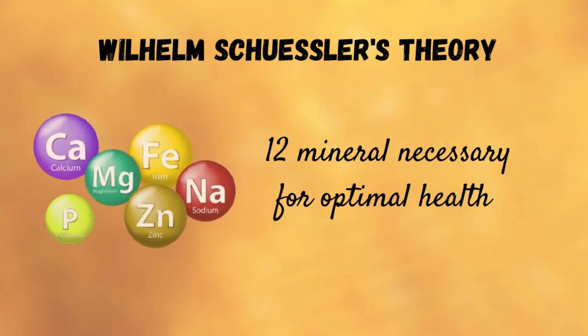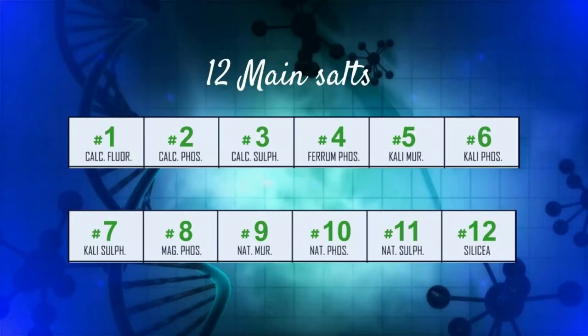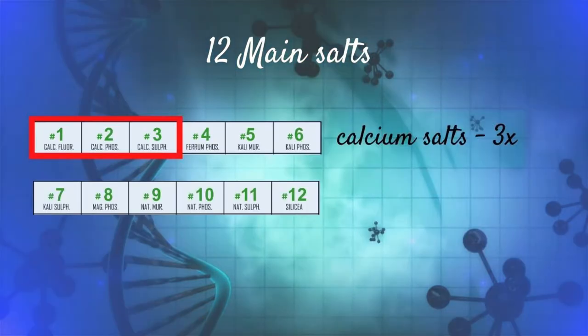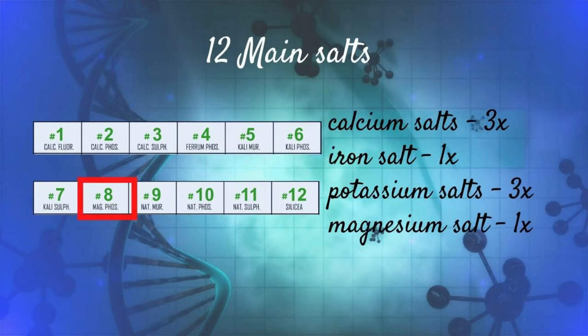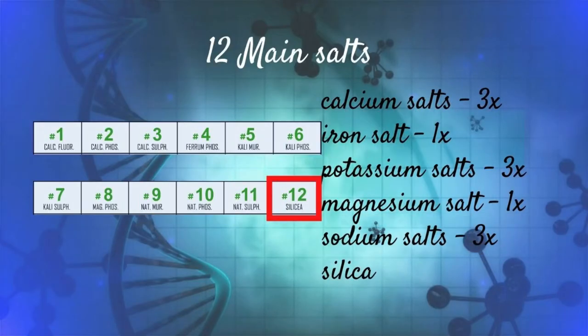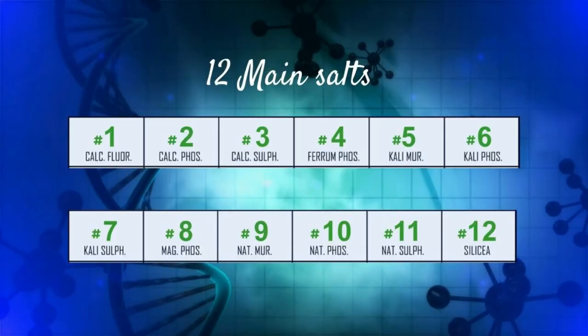When he analyzed the ash residue of human cells, he found that there are 12 inorganic salts critical for balancing cellular activity and health. These 12 salts include three calcium salts, one iron salt, three potassium salts, one magnesium salt, three sodium salts, and finally silica.